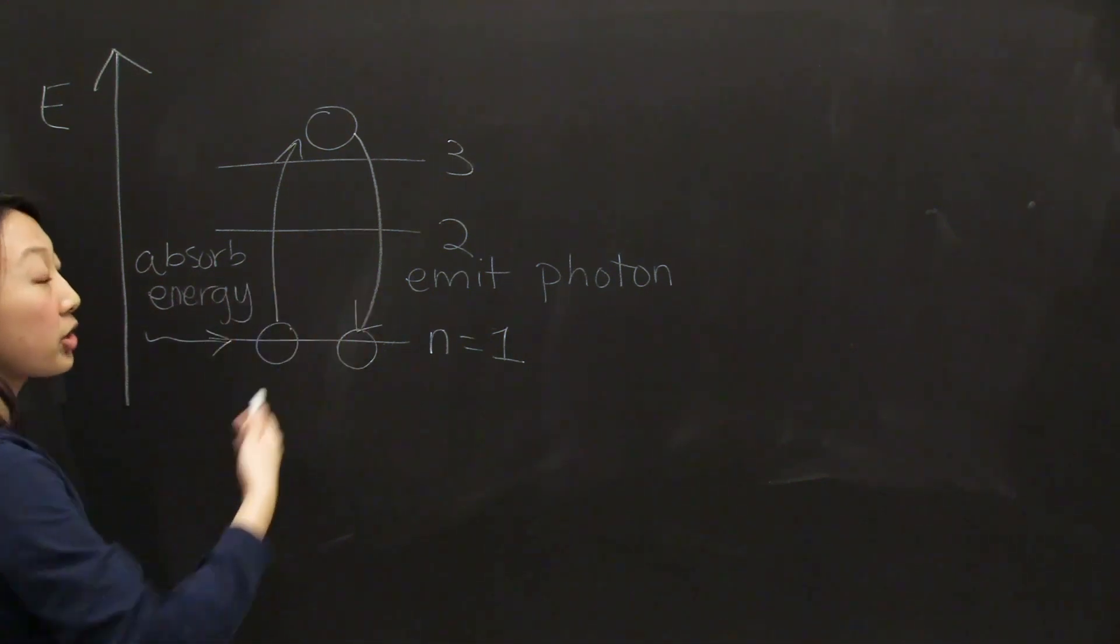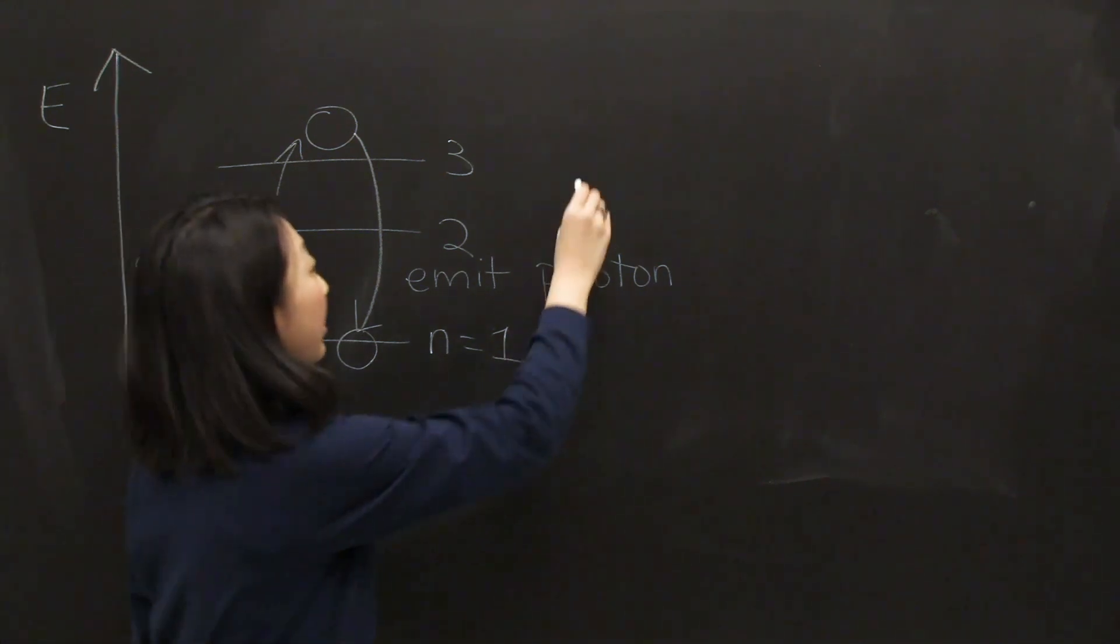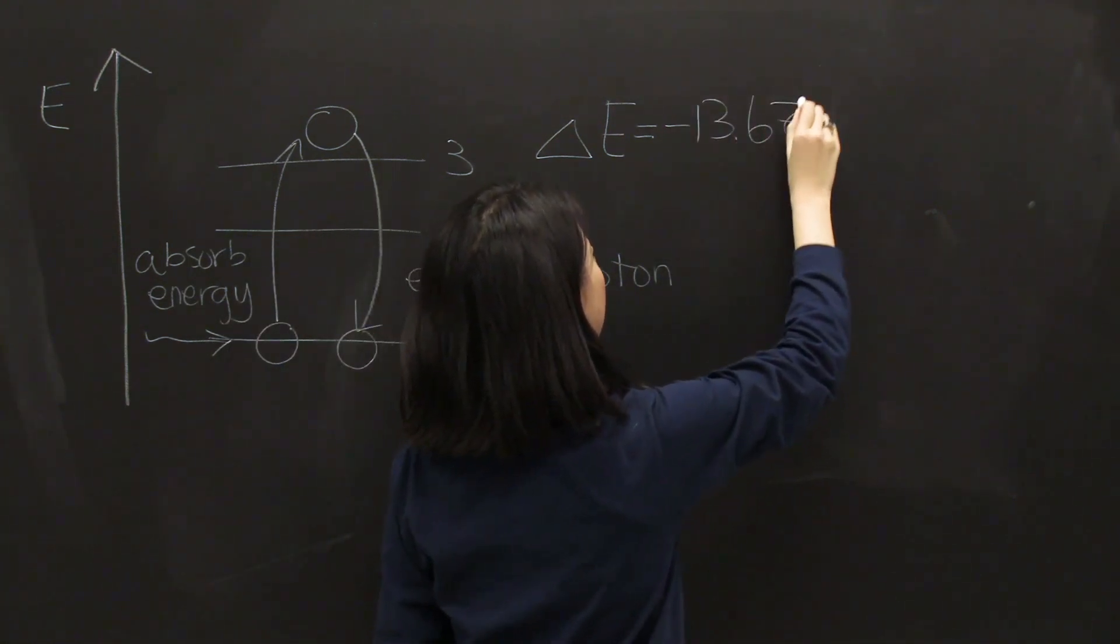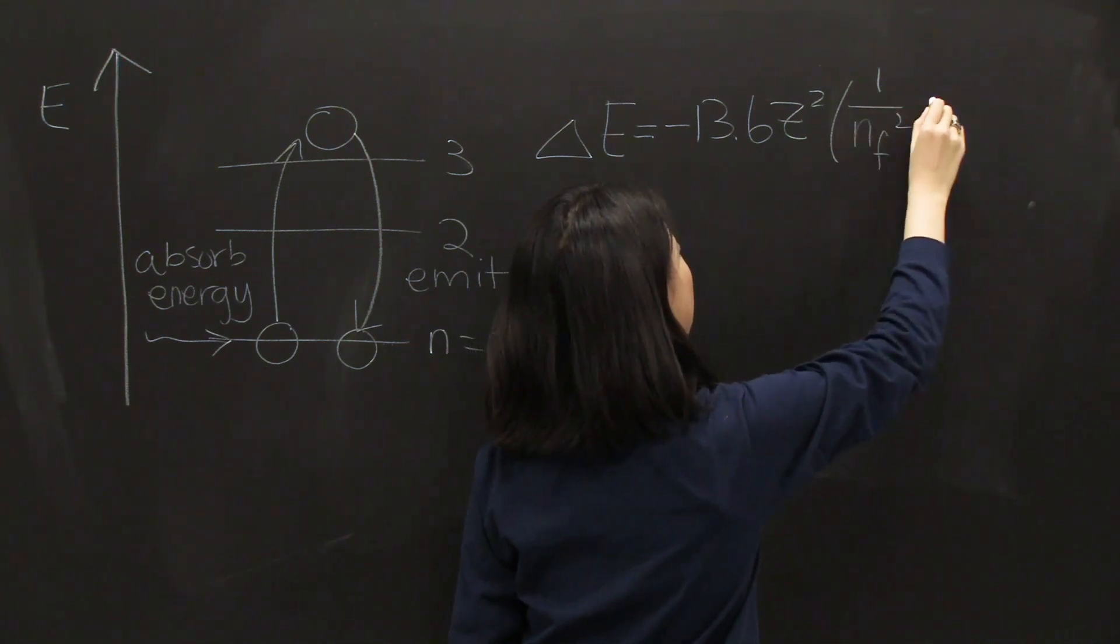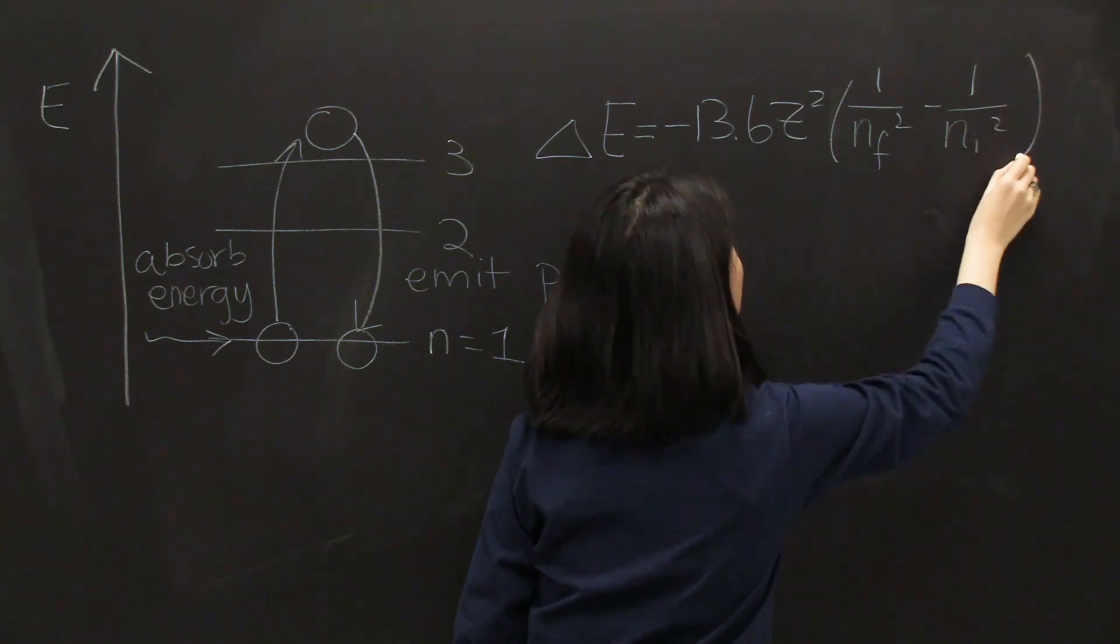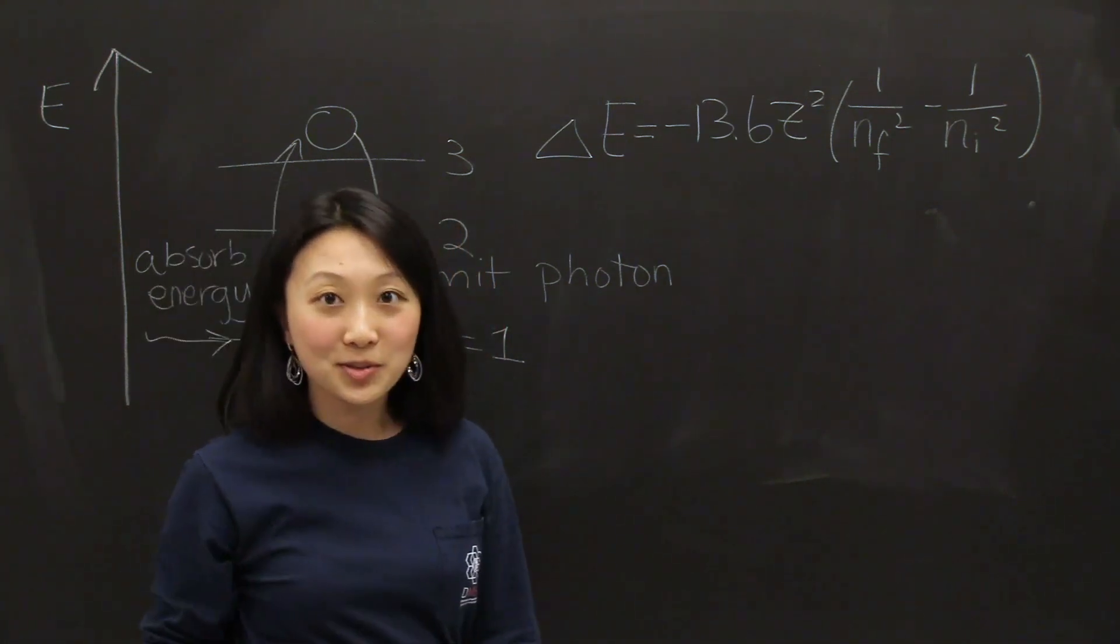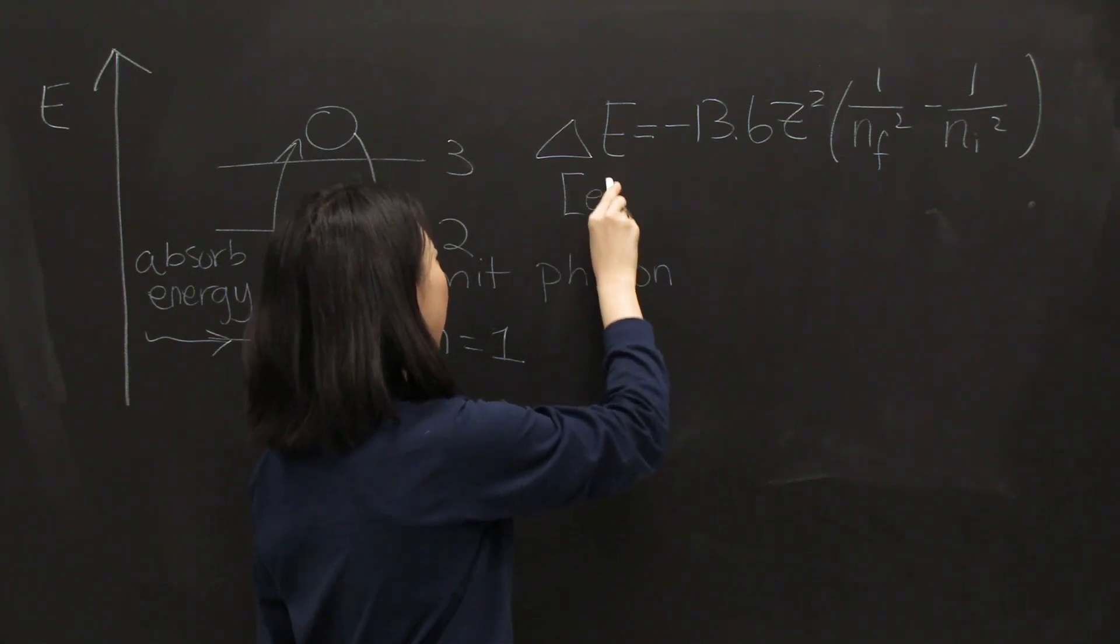These different electronic transitions can be tracked with this equation. So the change in energy is equal to minus 13.6 z squared times 1 over nf squared minus 1 over ni squared, where z is the atomic number, nf is the final state of the electron, and ni is the initial state of the electron. And this change in energy is in electron volts.